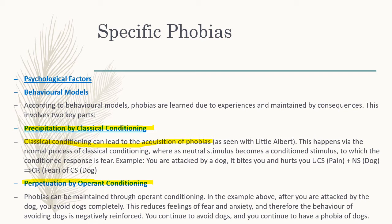For example, you're attacked by a dog — it bites you and hurts you. So UCS (pain) plus NS (dog) equals the CR (fear) of the CS (dog). Classical conditioning can lead to a phobia, but operant conditioning can maintain it. After being attacked by a dog, you avoid dogs completely. This reduces fear and anxiety, and therefore the behaviour of avoiding dogs is negatively reinforced. You continue to avoid dogs and continue to have a phobia of dogs.